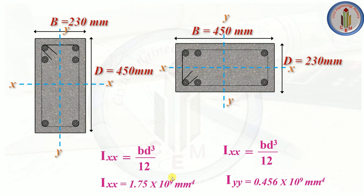Calculating the moment of inertia for the cross-section with breadth 230 and depth 450 gives 1.75, while the cross-section with breadth 450 and depth 230 gives 0.456. From this we can conclude that the cross-section with more depth has higher stiffness and rigidity compared to the cross-section with lesser depth.